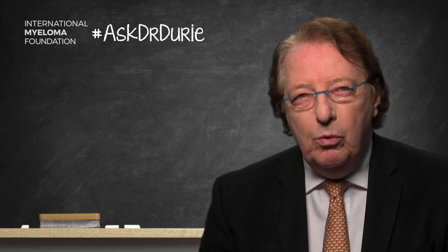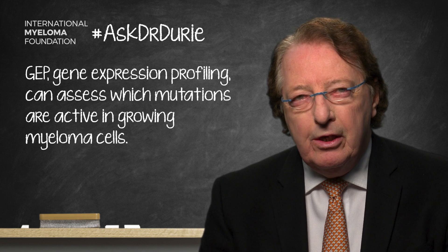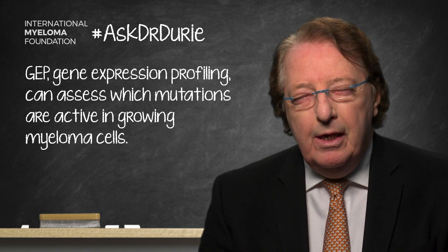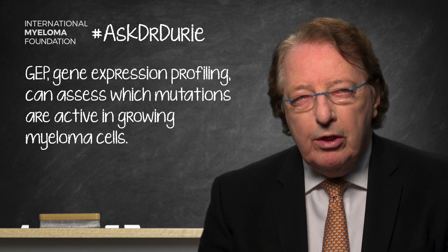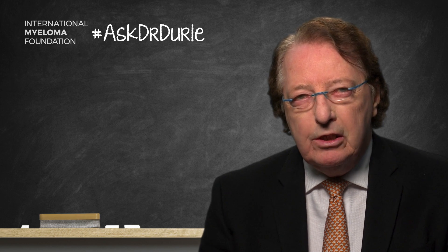In addition, one can look using a test called GEP — Gene Expression Profiling — to see which of these mutations are currently active in the growing myeloma cells. This is very helpful and is an aspect of what is called precision medicine, where one looks at which mutations are present and which ones are active, in an effort to identify new therapies which can shut down abnormally active genes.